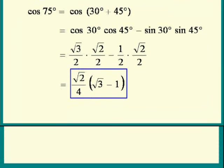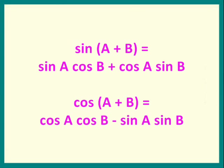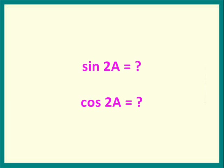From the identities sine of a plus b and cosine of a plus b, we can easily derive identities for sine of 2a and cosine of 2a — these are called the double-angle identities. Give it a try to see what the result looks like. I hope you enjoyed this lesson. I'll see you next time. Bye!